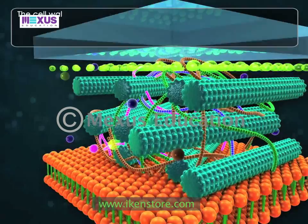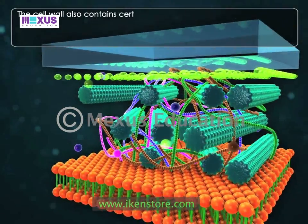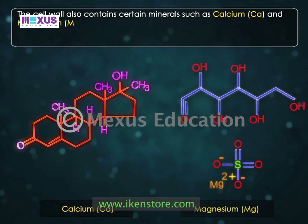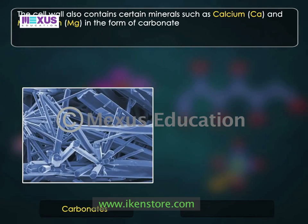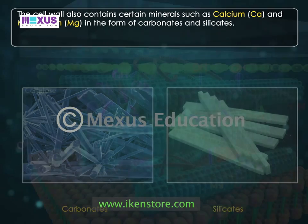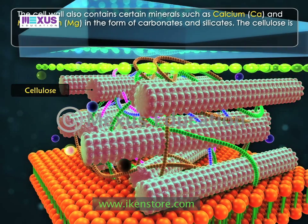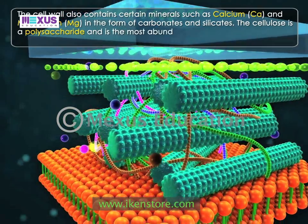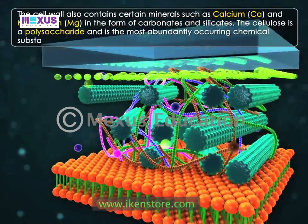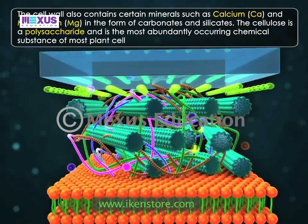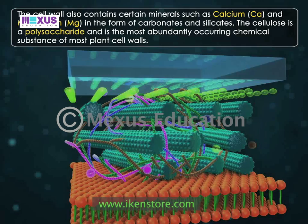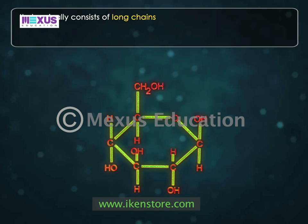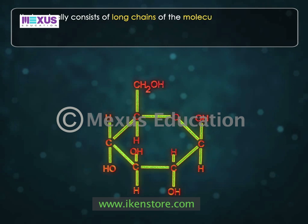The cell wall also contains certain minerals such as calcium and magnesium in the form of carbonates and silicates. Cellulose is a polysaccharide and is the most abundantly occurring chemical substance of most plant cell walls. It chemically consists of long chains of glucose molecules.